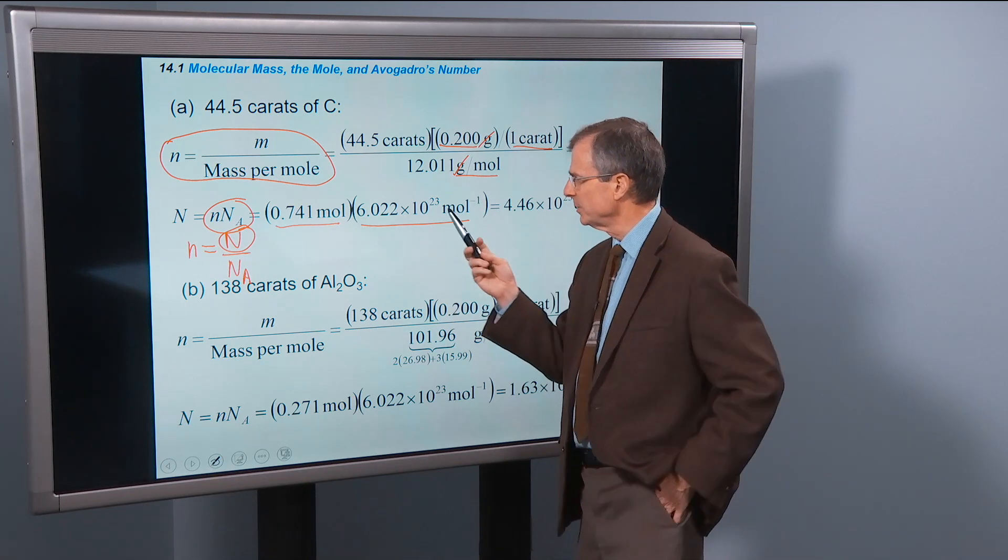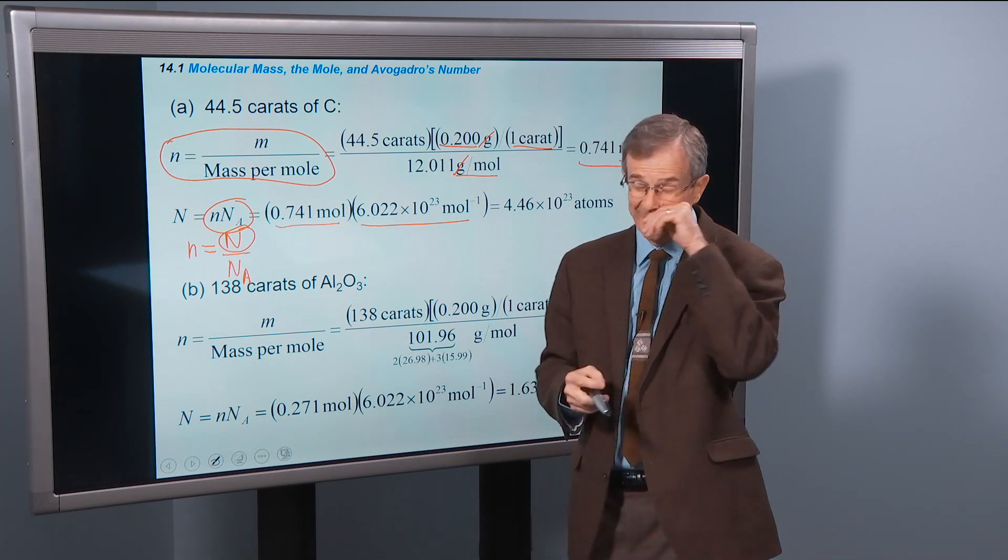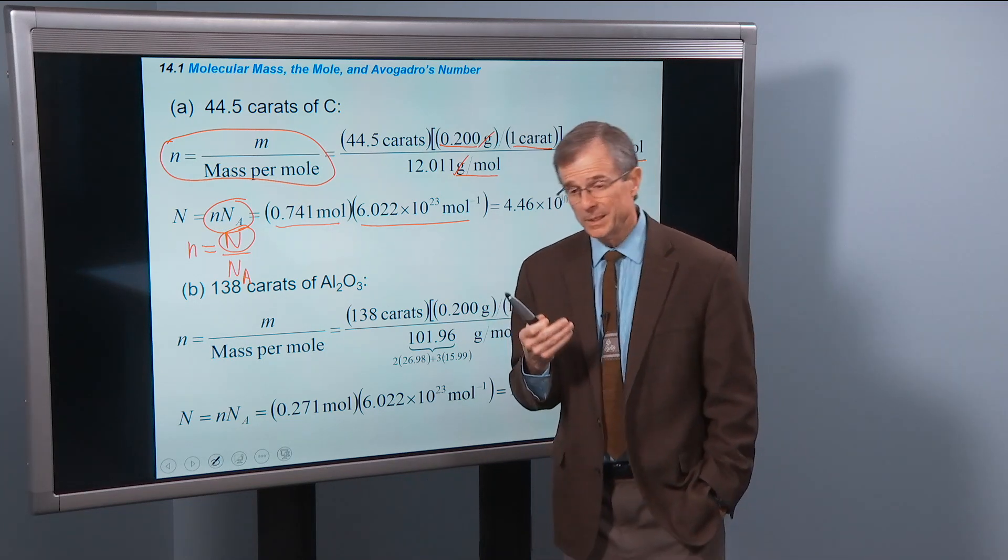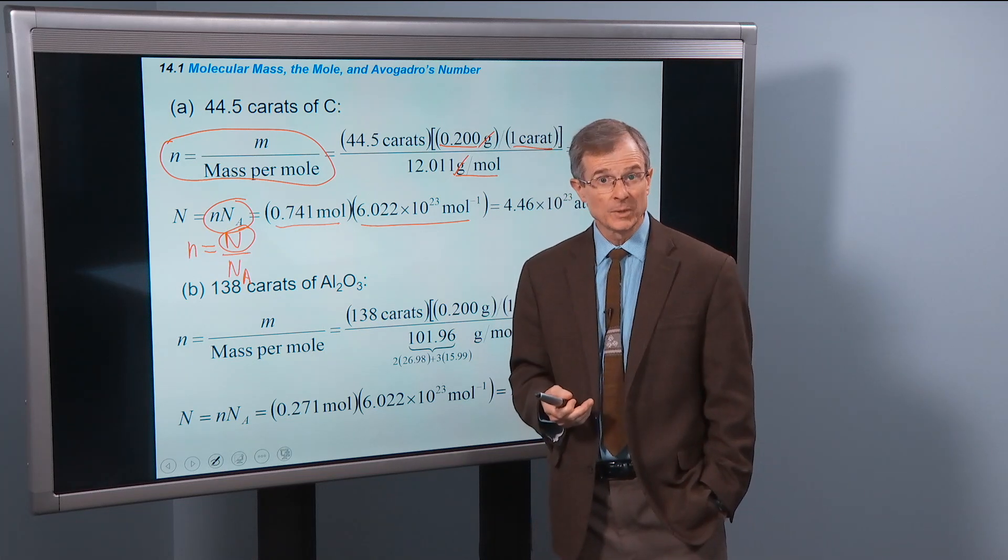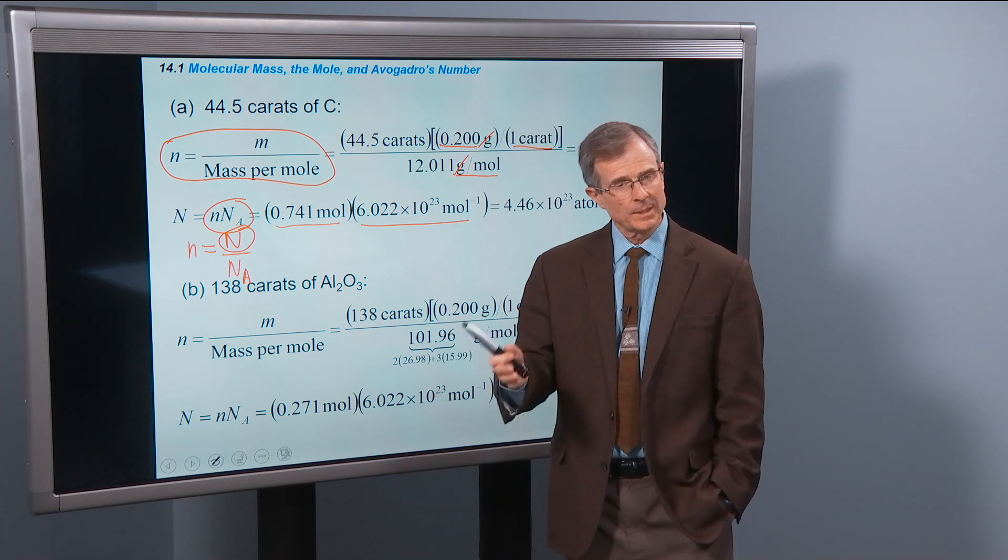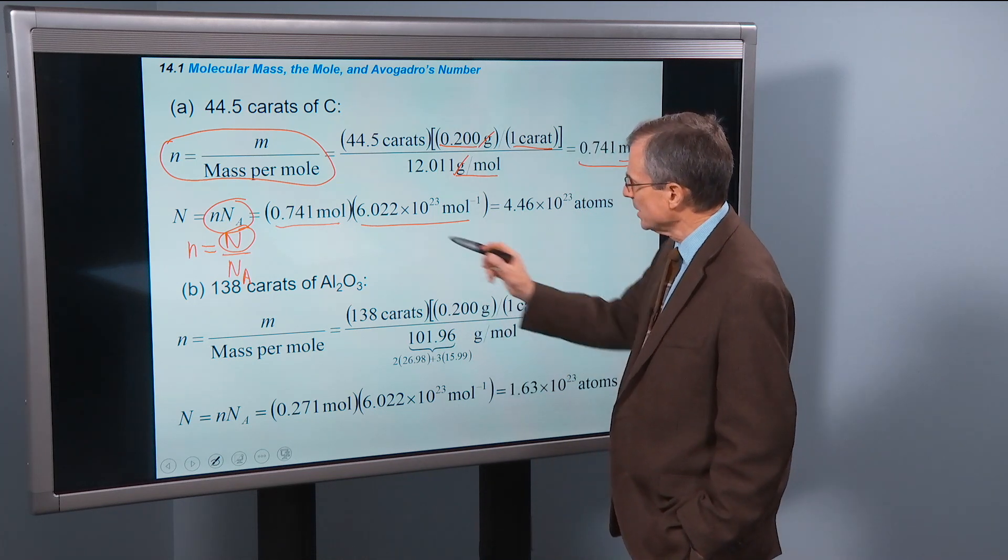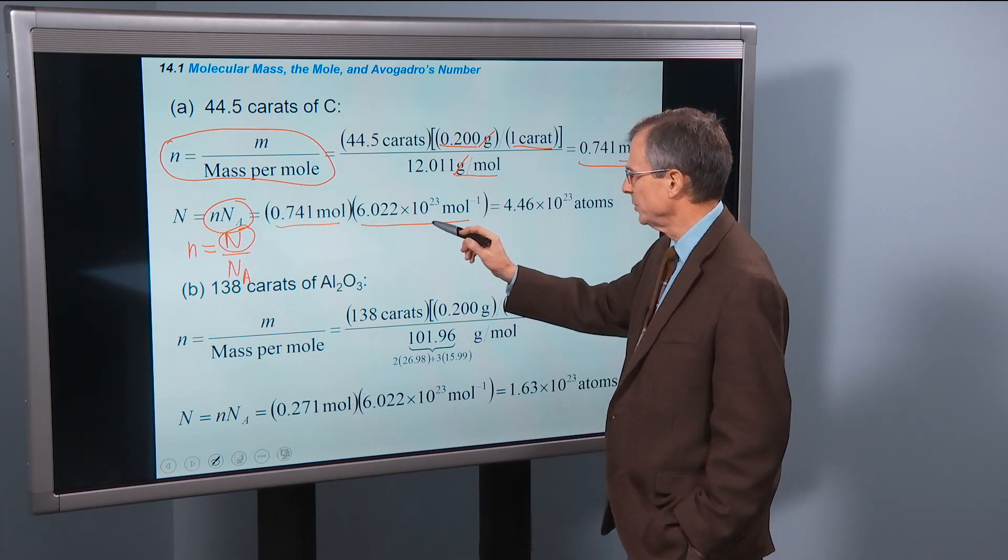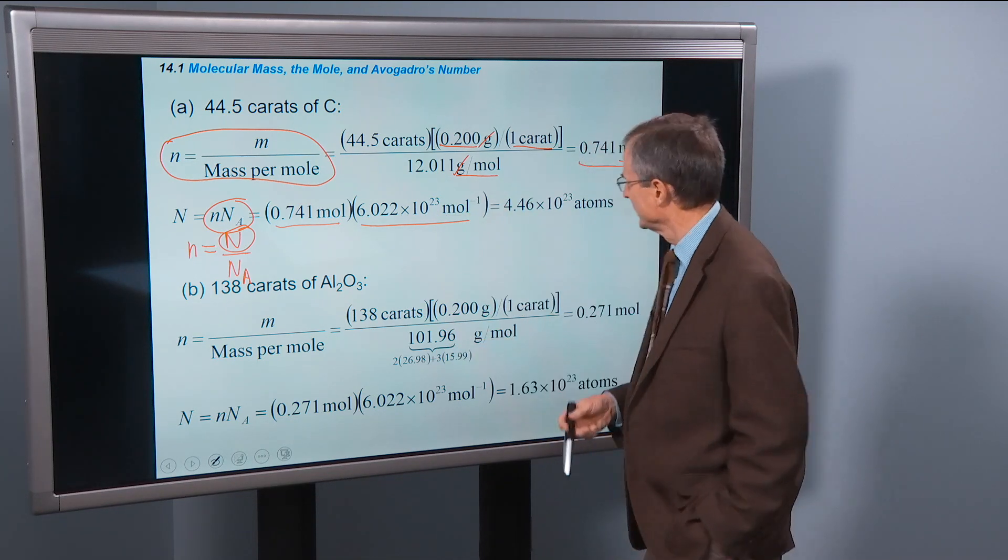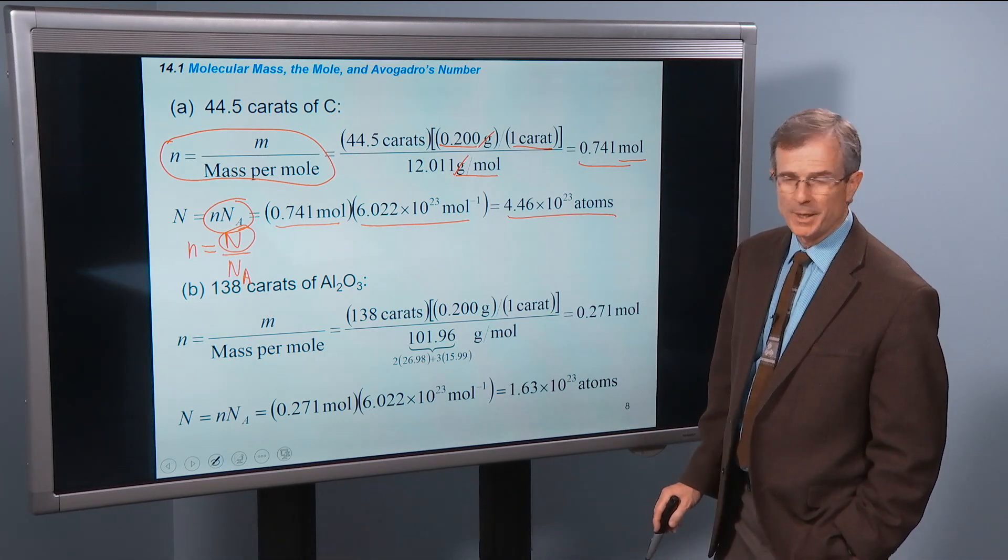Sometimes it's written as 6.022 times 10 to the 23 particles per mole. That's how I wrote it in the concept. Here, since particles is not really an SI unit, it's kind of like radians, it can come in and out of the equation at will. Sometimes it's just written as 6.022 times 10 to the 23rd per mole. That gives 10 to 23 atoms of carbon inside that Hope Diamond.